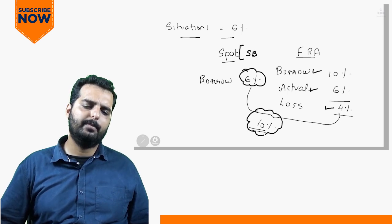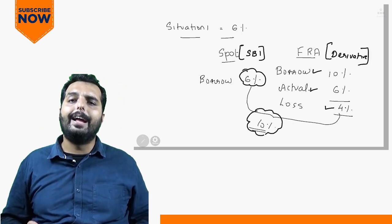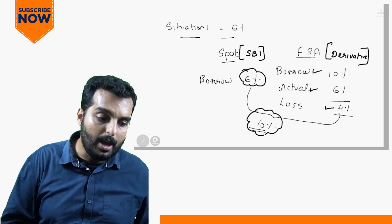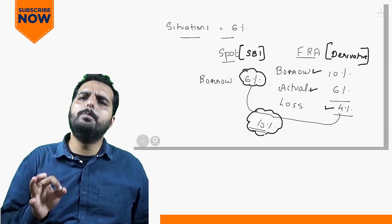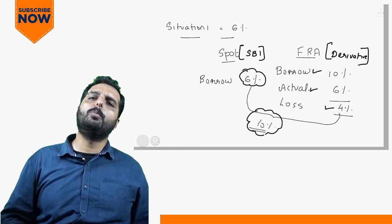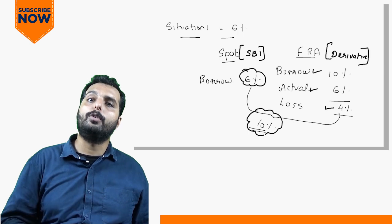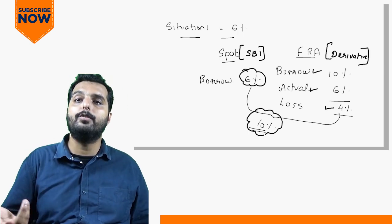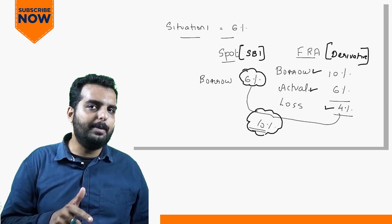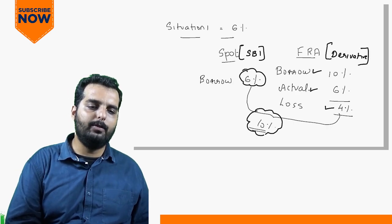The FRA bank and SBI (spot bank) need not be the same institution. The ideal objective is that I should be able to borrow at 10% regardless of rate movements and sleep peacefully. I should not think 'had I not entered the FRA, I would have saved 4% when the rate became 6%.' You can't think that way — because what if the rate had become 12%?